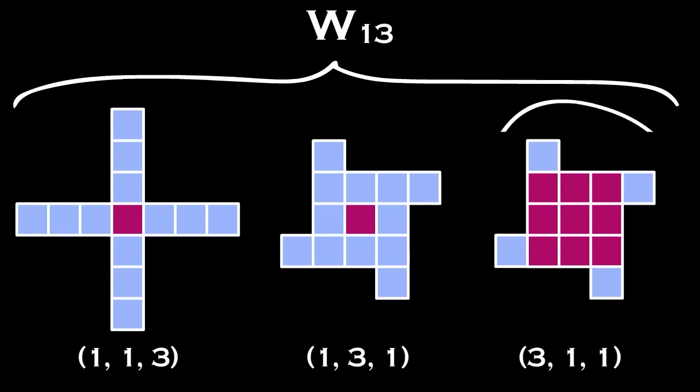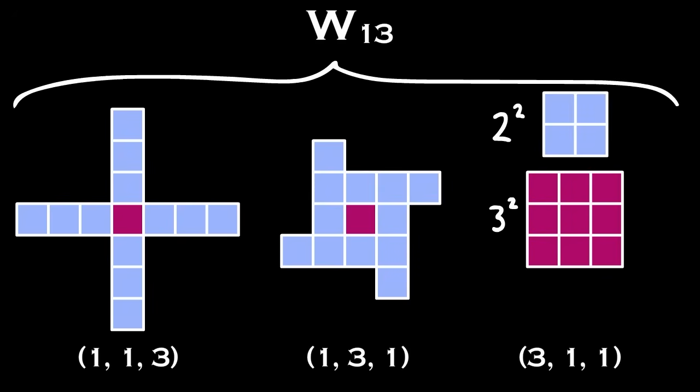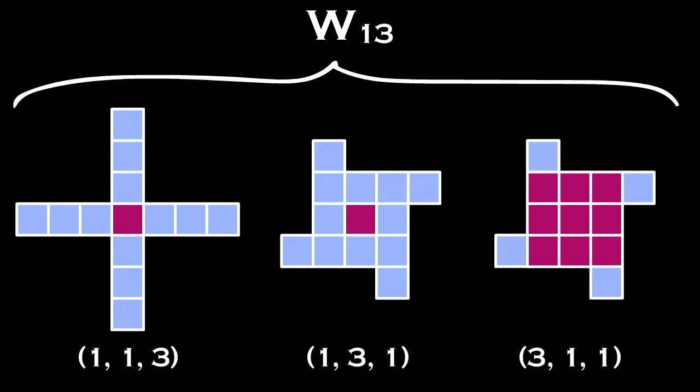Note that there does exist a windmill where y equals z, and thus there is a solution to Fermat's two squares theorem, namely that 13 is 2 squared plus 3 squared. However, note that in this set of windmills, there is also a windmill where x equals y.